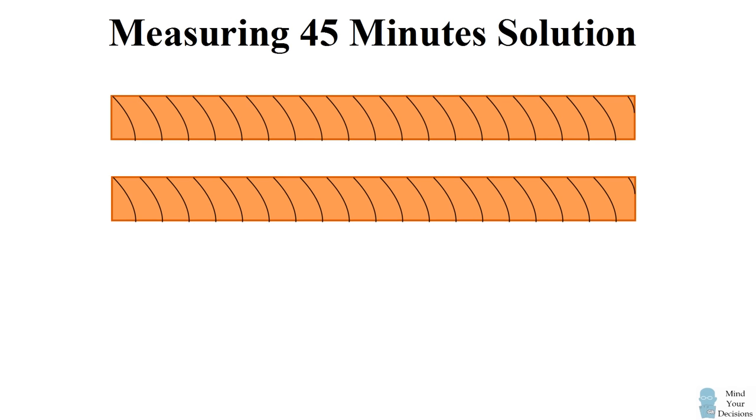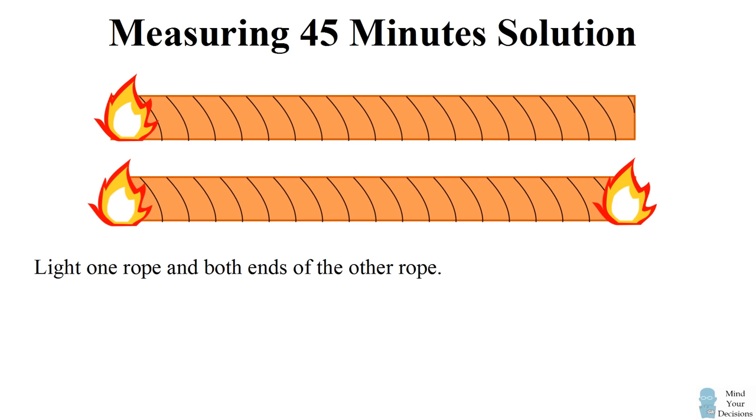So it takes a little bit of ingenuity to measure 45 minutes. I'm going to explain the steps first and then I'm going to show you how it works in a little animation. The key is we start by lighting the ropes in three different places. At the same time, we'll light one end of one rope and both ends of the other rope. The rope which has two flames is going to burn two times as fast as it normally would, so it's going to burn up in 30 minutes.